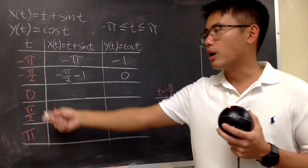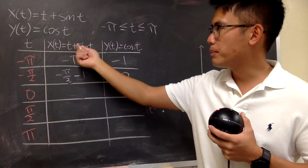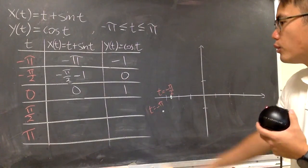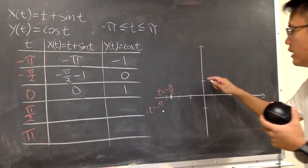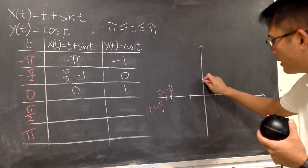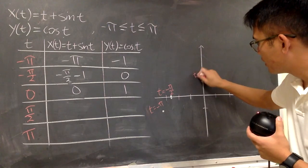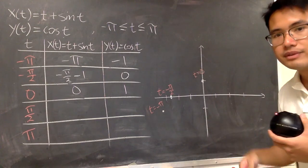When t is 0, plug in here, you have 0 plus sine of 0, which is still 0, and cosine of 0 is 1. So, you plug in 0, 1, 0 for x, y for 1, which is right here, and this is the time when t is 0. And then continue.